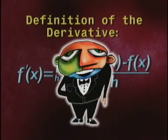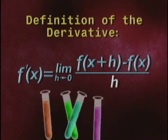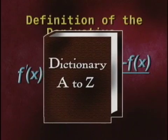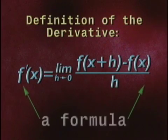What you see here is the formal definition for the derivative. The derivative of a function f, or f prime of x, equals the limit as h approaches 0 of f of x plus h minus f of x divided by h. I know that looks a lot like a formula and not a dictionary definition, but when we talk about the definition of the derivative, that's what it is, a formula.